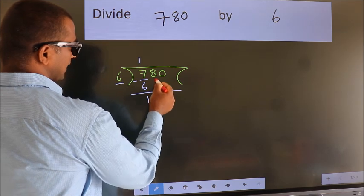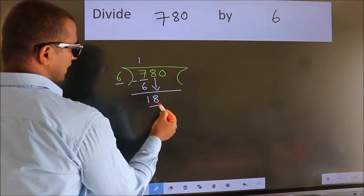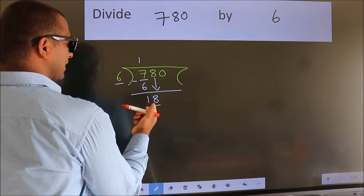After this, bring down the beside number. So, 8 down. So, 18. When do we get 18?